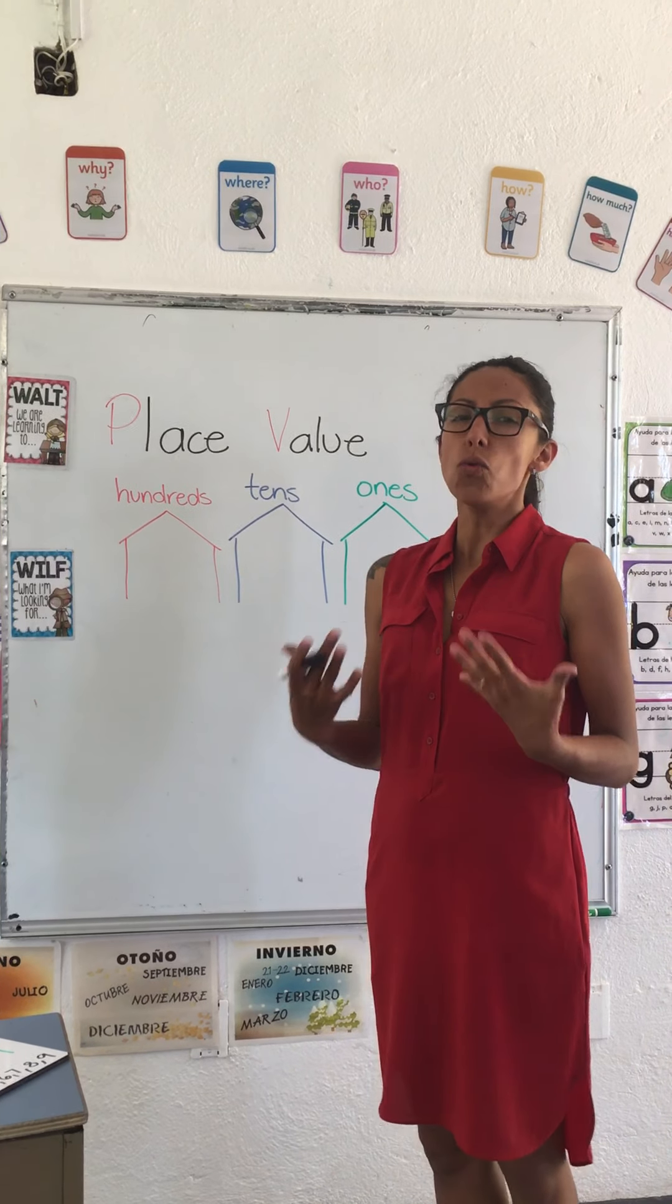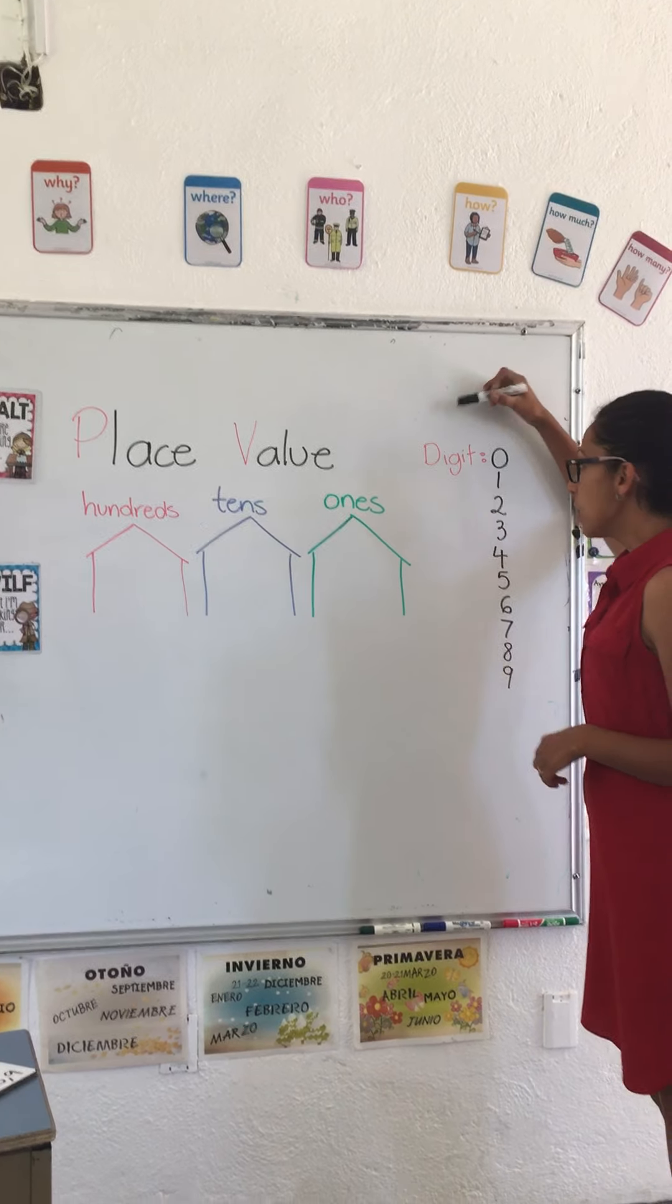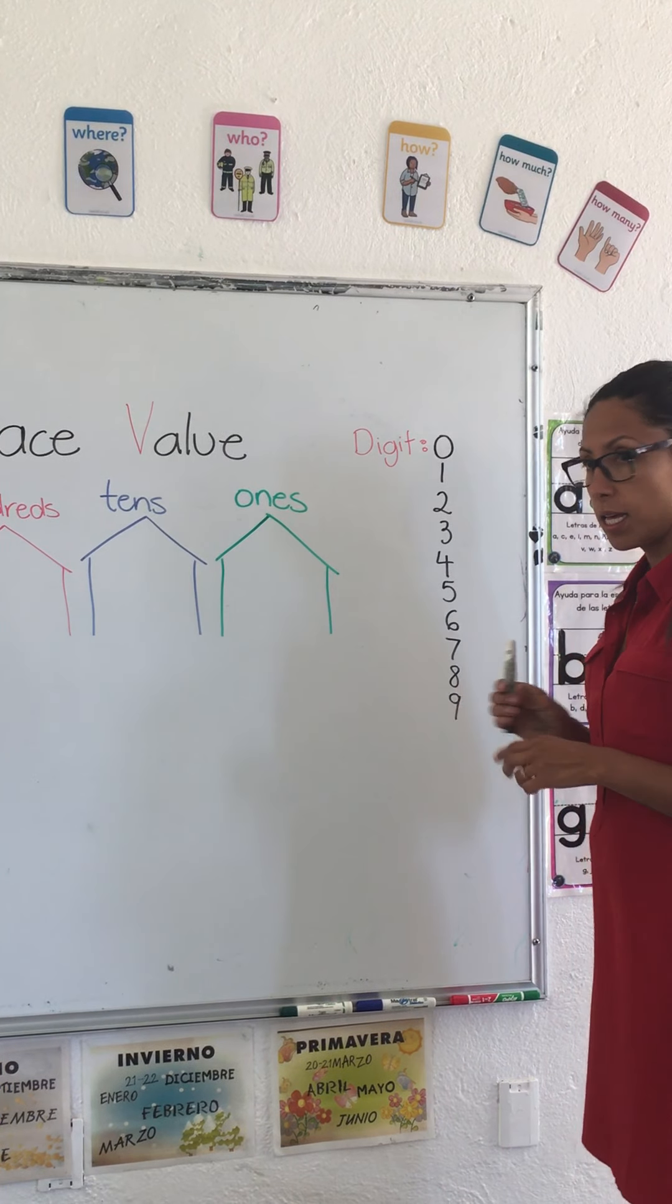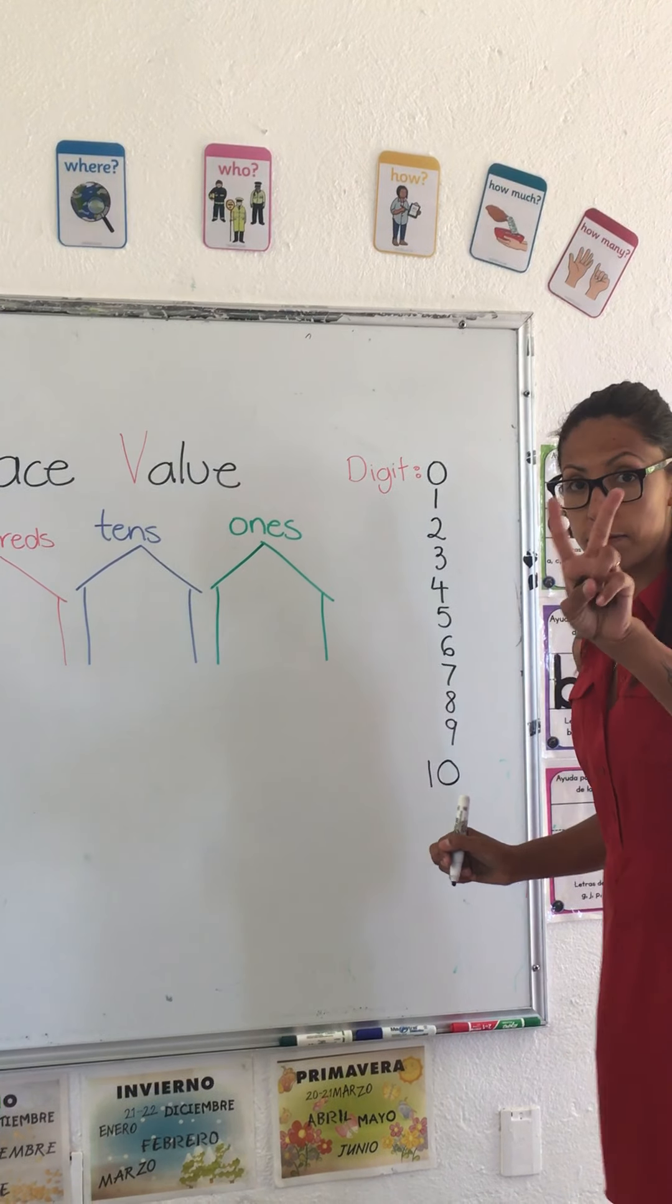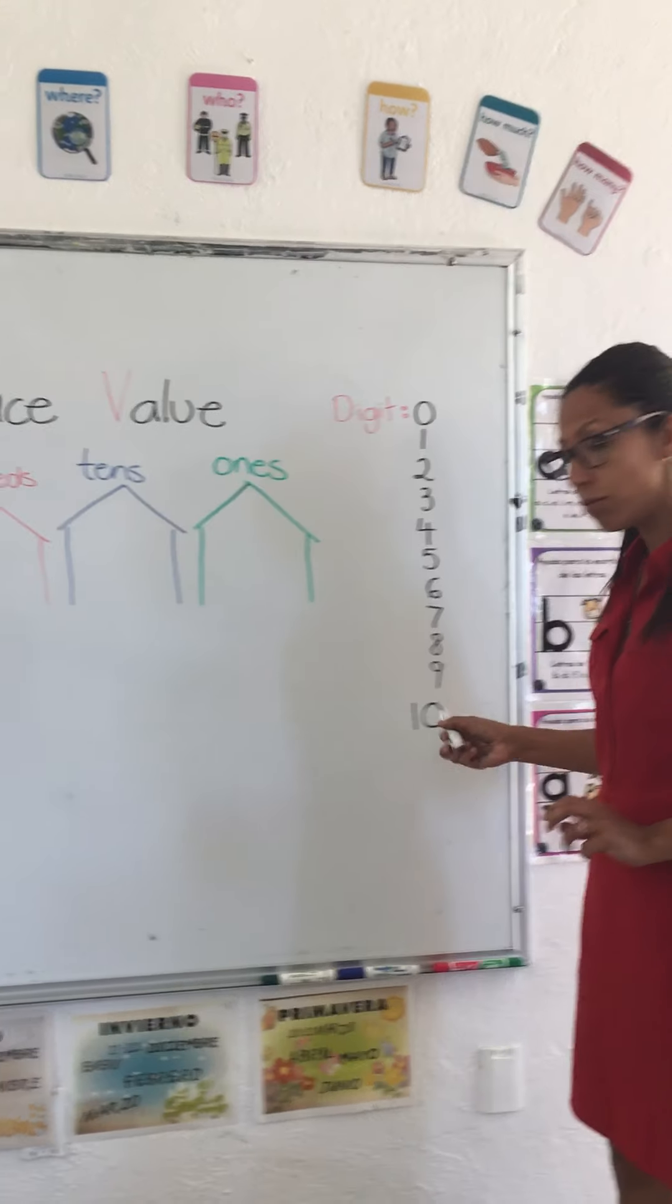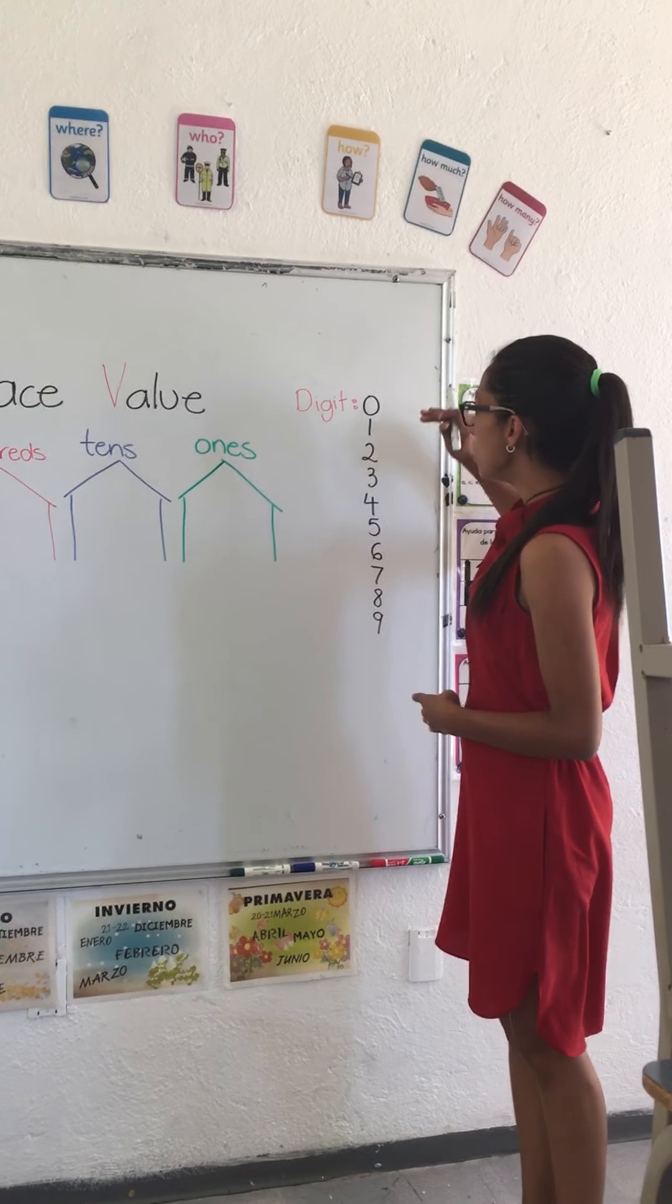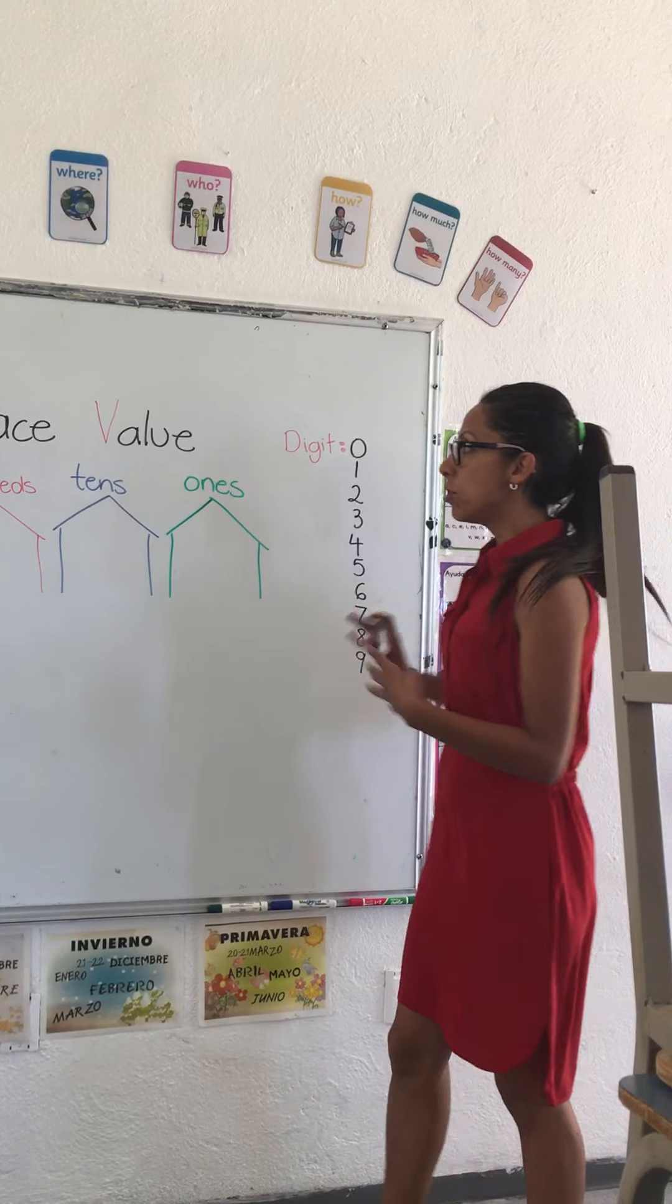To learn place value, we need to understand what is a digit. A digit is just one number from zero to nine. After nine comes ten, but now we have two digits because we have one and zero. So this is not one digit anymore, those are two digits. A digit is a number from zero to the number nine.